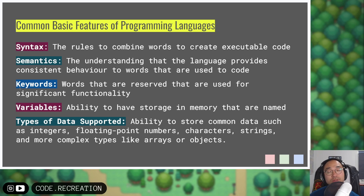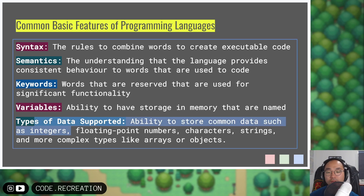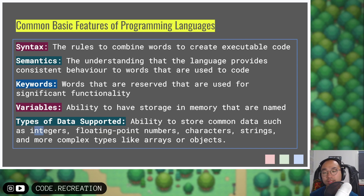There are keywords — words that you can't use as variable names or custom identifiers because they are reserved to be executable code that performs certain tasks. With programming languages, you can declare variables: basically a labeled storage in memory where you store relevant data. You have different types of data supported by the programming language. The most common data types are integers, floating point numbers which represent decimal and real numbers, characters, strings, and complex types like arrays and objects.